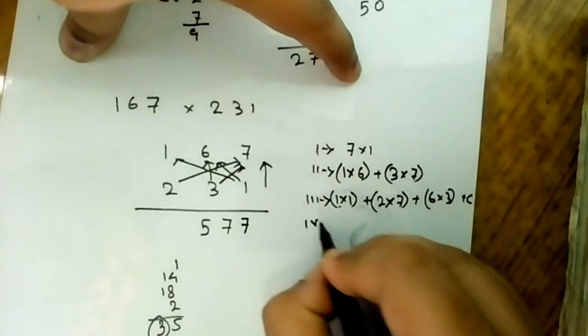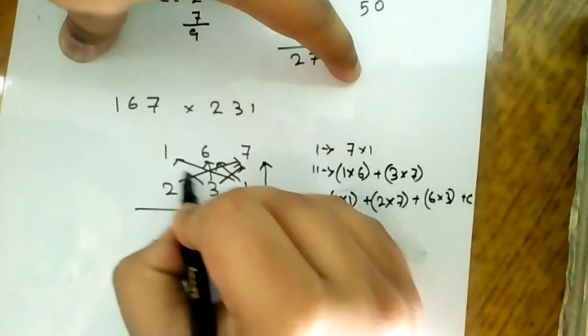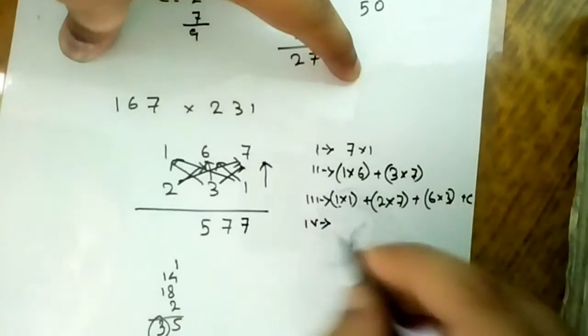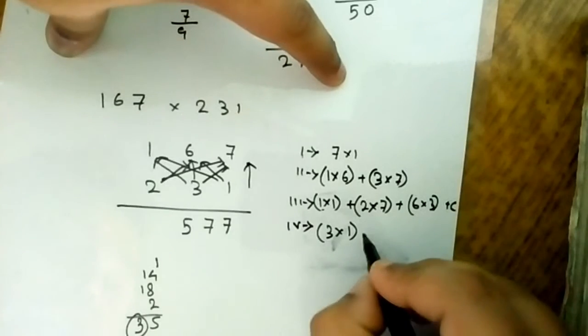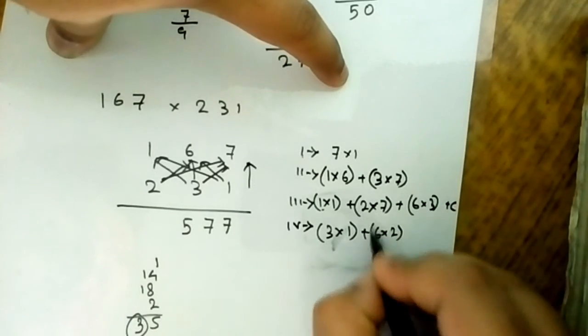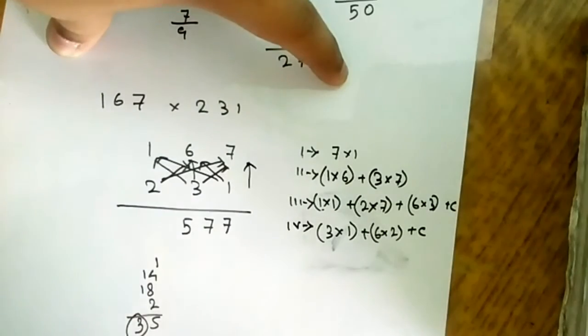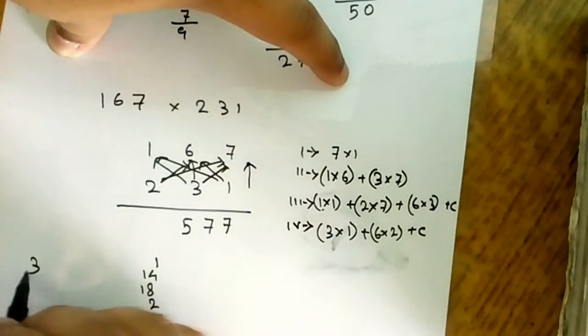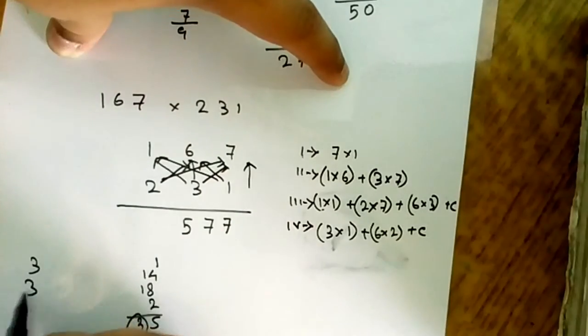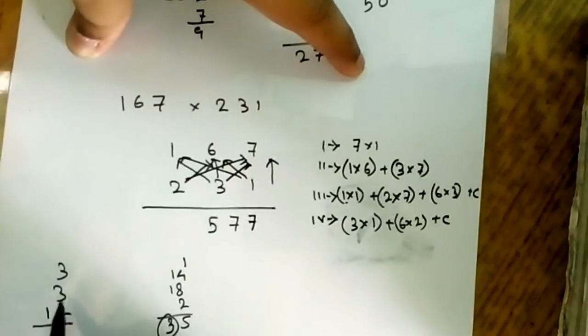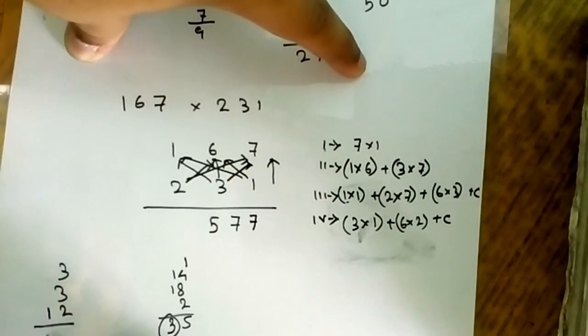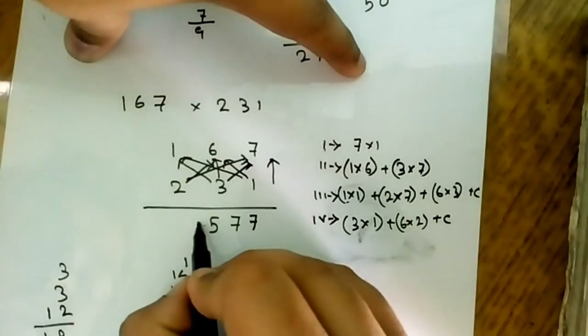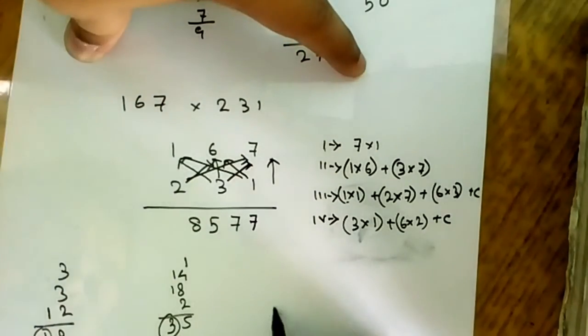In the fourth one, we have to multiply 3 into 1 with 6 into 2. 3 into 1 plus 6 into 2 plus carry. The carry is 3. 3 into 1 is 3, 6 into 2 is 12. 3 plus 3 is 6, 6 plus 12 equals 18. I will write 8 and the carry is 1.